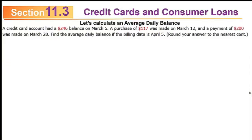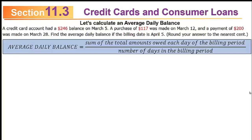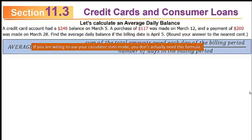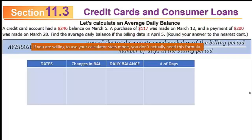Here's an example. A credit card account had a $246 balance on March 5th. A purchase of $117 was made on March 12th, and a payment of $200 was made on March 28th. Find the average daily balance if the billing date is April 5th, rounded to the nearest cent. To solve this, build a four-column table: the first column has dates, the second has changes in balance, the third has the daily balance, and the fourth has the number of days. The average daily balance follows from this table.